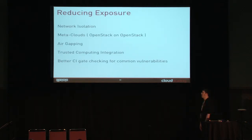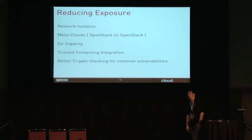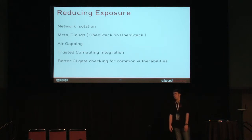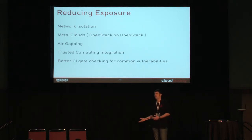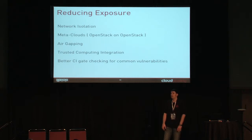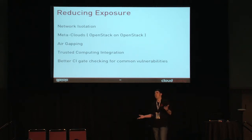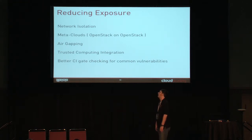Reducing exposure. These are some of the things that people do for reducing exposure — I'm not going to claim that this is the right answer for any of you. You can do network isolation, and that's something that's big. We at Cloud Scaling don't believe in network isolation at layer two — we believe in network isolation at layer three. Other folks need layer two; they need VPN tunnel endpoints as a service. You figure it out on your own in terms of reducing exposure.